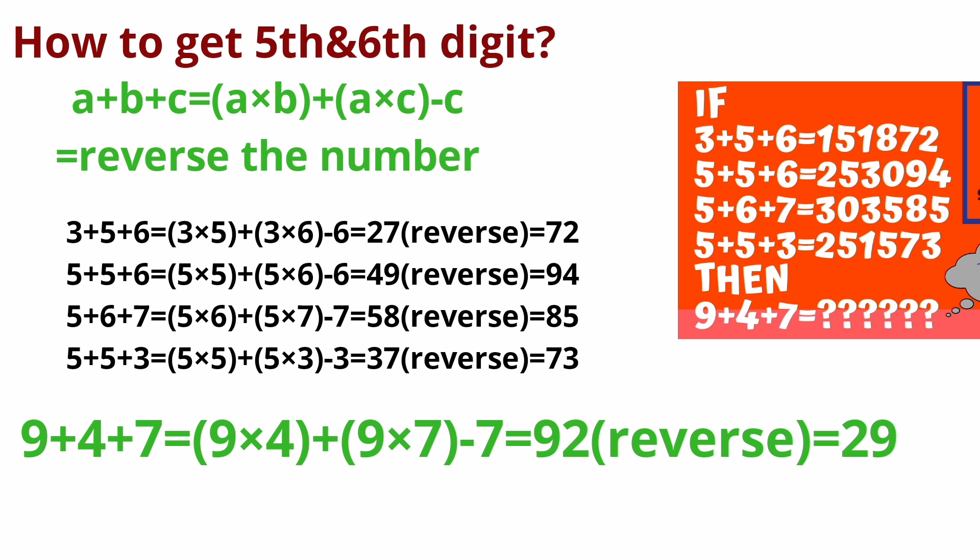Let's see what we need to apply. a+b+c apply a into b plus a into c which we need to reverse. Follow this frame we need to see that 72, 94, 85, 73. We need to apply the same process. Last row 9 into 4, 9 into 7 we need to solve. 92 reverse 29.